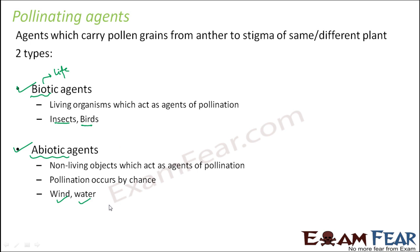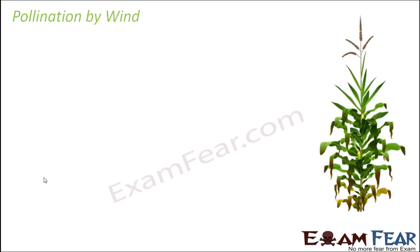One major difference between biotic and abiotic agents is that pollination with abiotic agents occurs just by chance. For example, when wind blows, it is a matter of chance that some pollen grains might be carried from one plant to another — whether actual pollination will happen or not is not certain. So with abiotic agents, there is always a matter of chance.